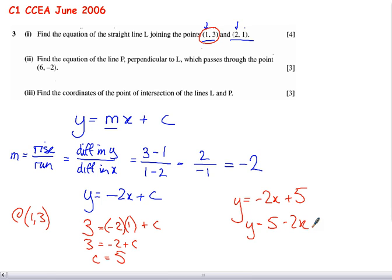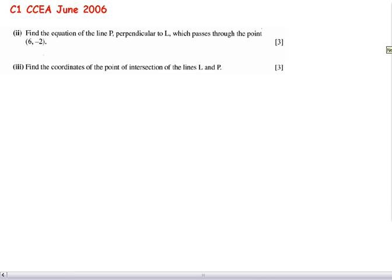So the second part of this question then asks you to find the equation of the line perpendicular to L, passing through that point. Well, perpendicular means at right angles. If we have two lines that are perpendicular, they will cross at right angles. But more than that, we know that if we have two lines and their gradients are perpendicular, m and n,